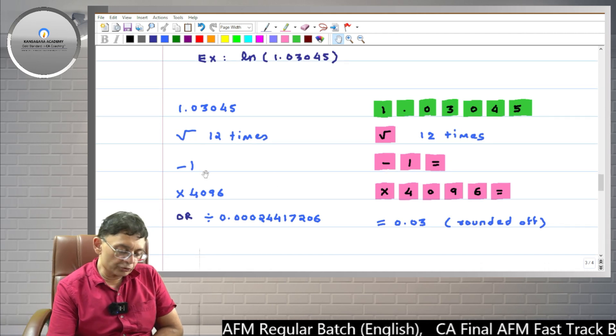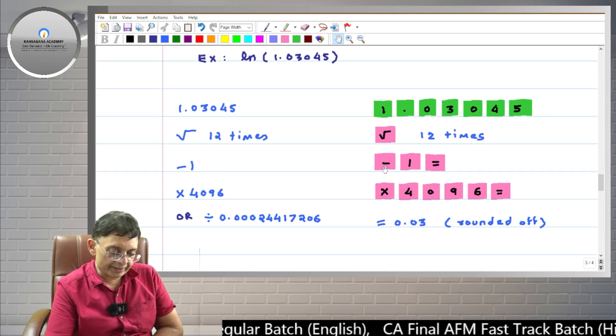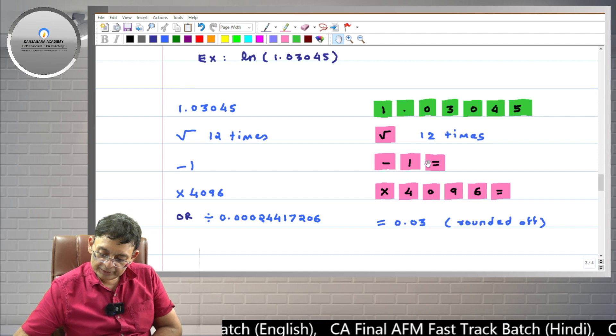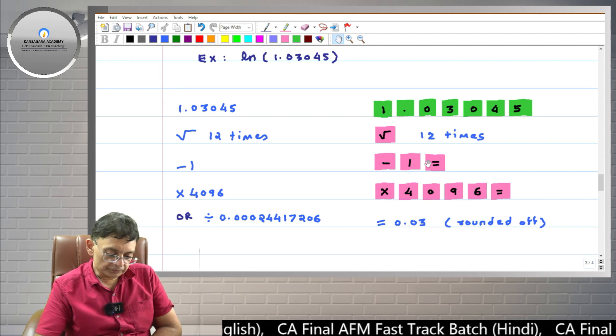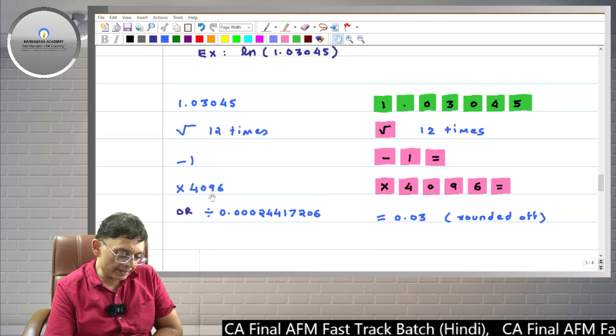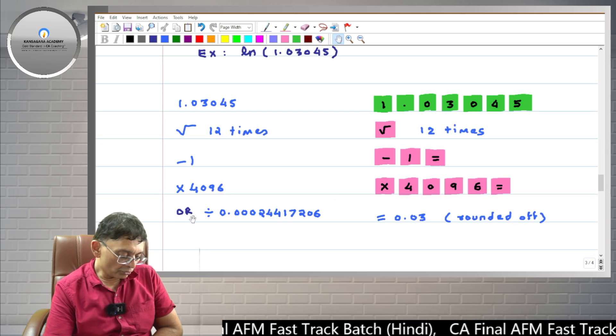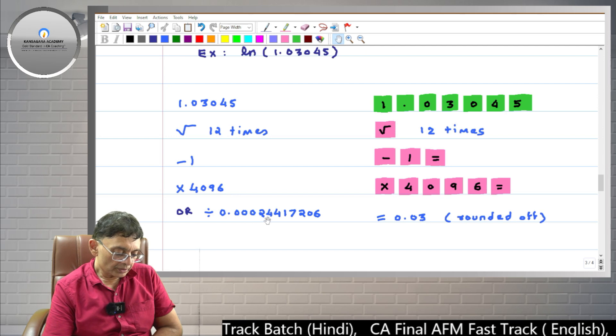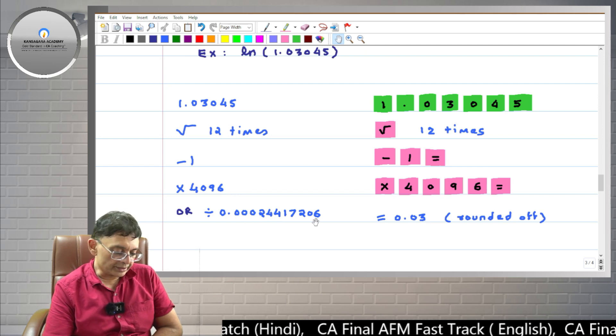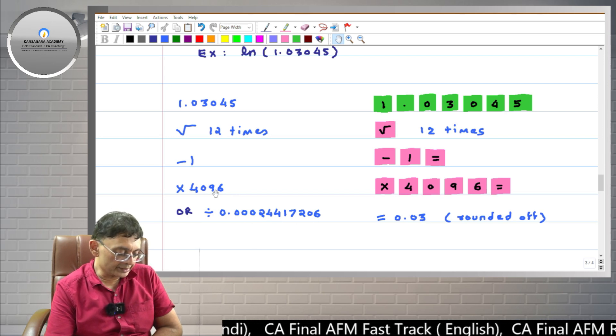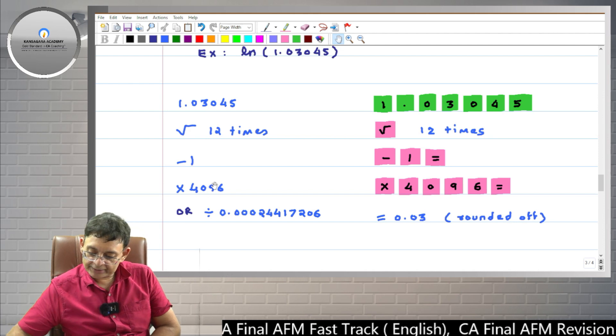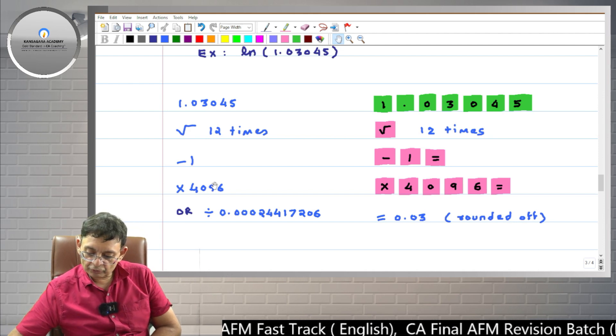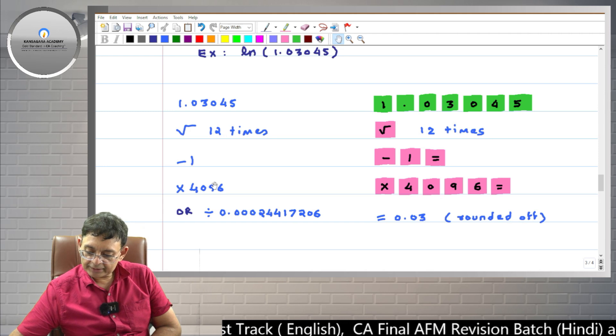Okay friends, then you have to do minus 1. So I am doing this minus 1 equals. Then friends, we have to multiply by 4096 or divide by 0.00024417206. But it is easier to do this thing. Multiply by 4096. So multiply 4096 equals.